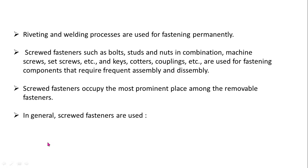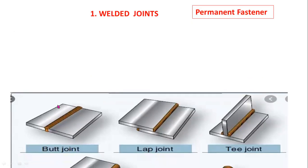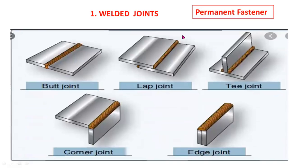In general, screwed fasteners are used to hold parts together, to adjust parts with reference to each other, and to transmit power. A welded joint is a permanent joint.